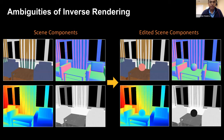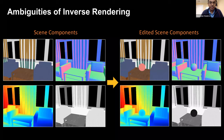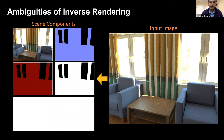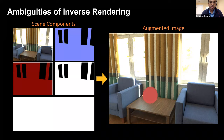To see why this is hard, note that there may be no unique solution — this is called inverse rendering. For example, the same input image can have different decompositions into scene components that describe the image equally well. But if we try to insert a ball using a wrong decomposition, it does not look realistic. So even though the problem has ambiguous solutions, achieving photorealism requires an accurate solution.